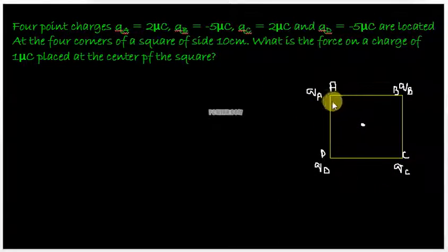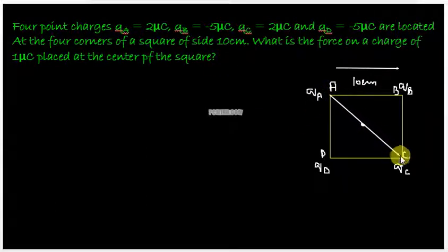We know that the side of the square is given to be 10 centimeters. So we'll write this side here 10 centimeters. Therefore what should be the diagonal of the square? We have two diagonals AC and the other diagonal is BD.